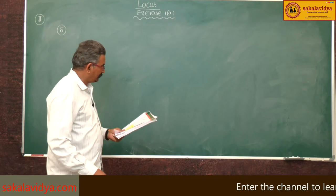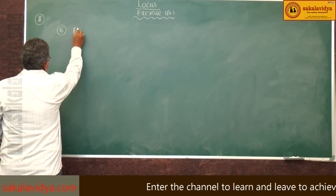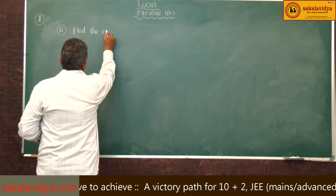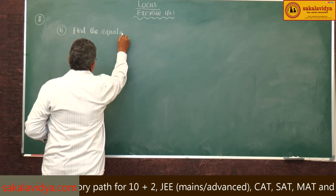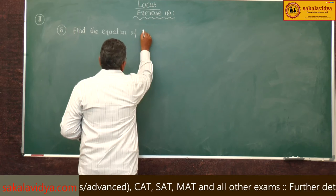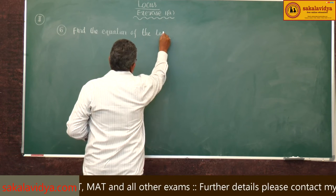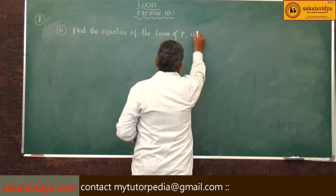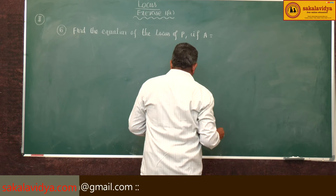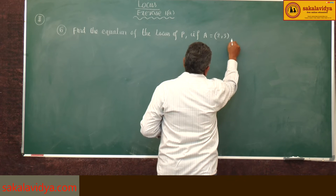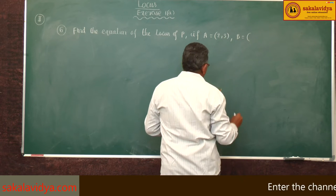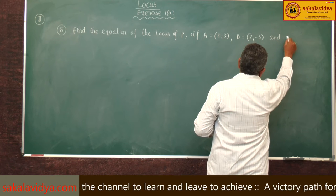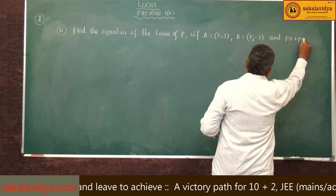Sixth problem: find the equation of the locus of P, if A equals (2, 3), B equals (2, -3), and PA plus PB is equal to 8.